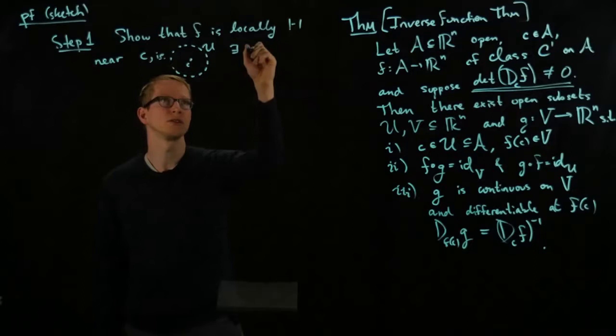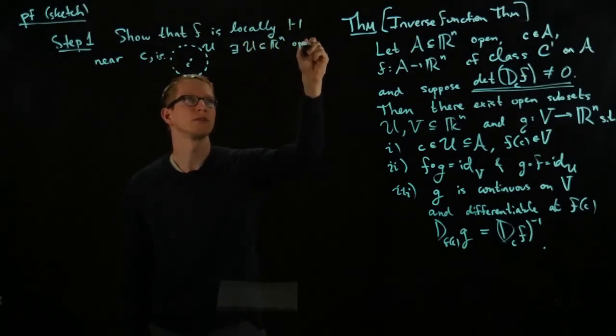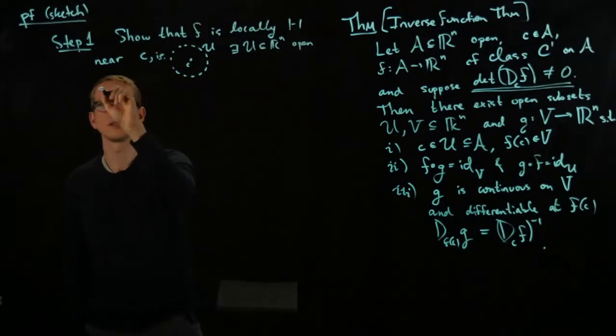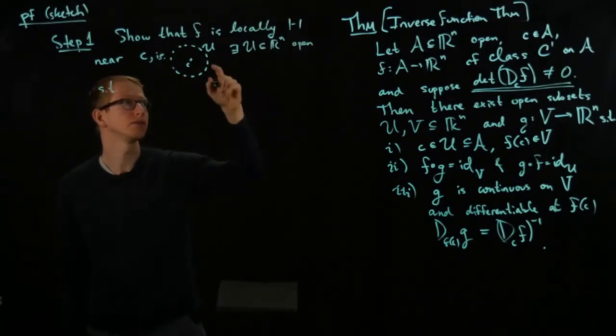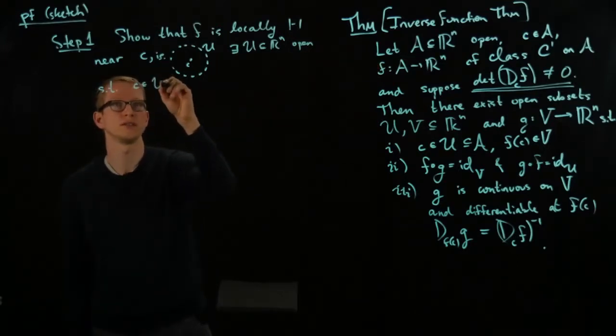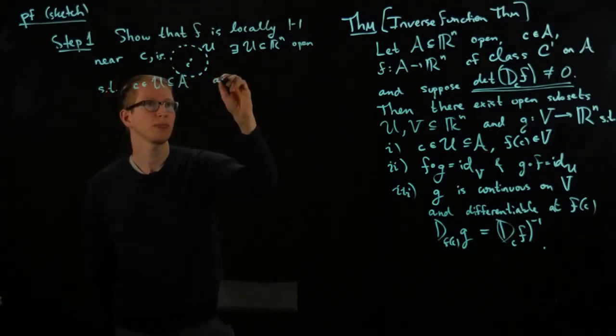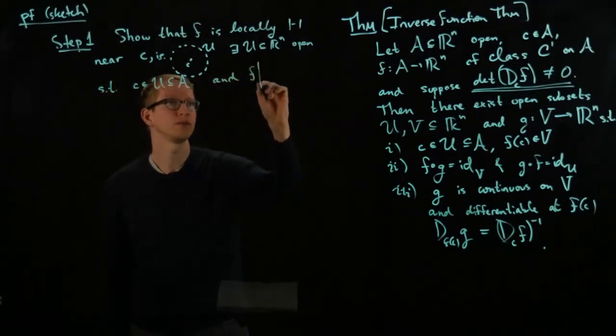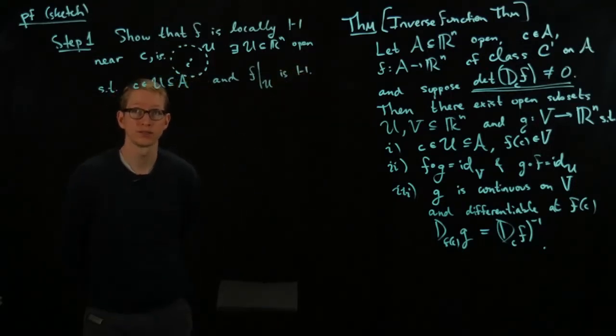then F is one to one. So there exists, i.e., there exists an open set U such that first F is, U is small enough so that it's inside the domain of A. So let me just say that C as in U is a subset of A. And F restricted to U is one to one. That's the first step.